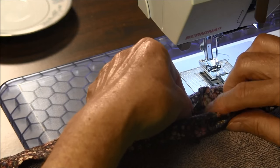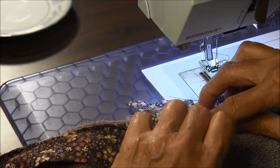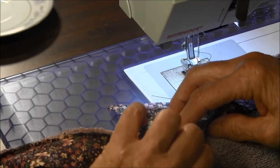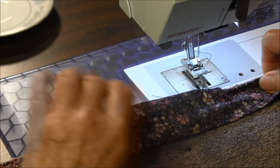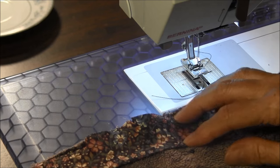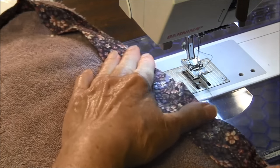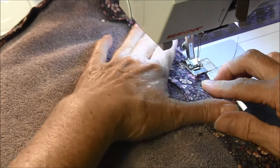Finger press it open. Now you have almost an invisible seam there. We're going to sew the rest of it using a quarter-inch seam allowance. Sew that down.